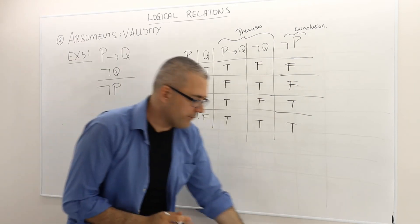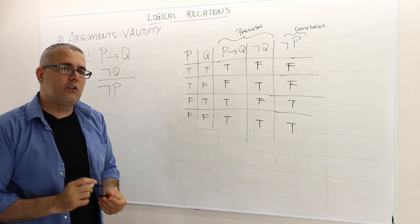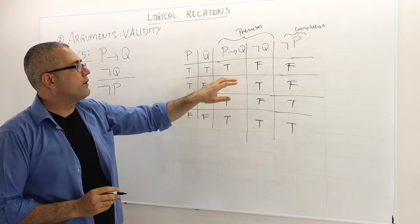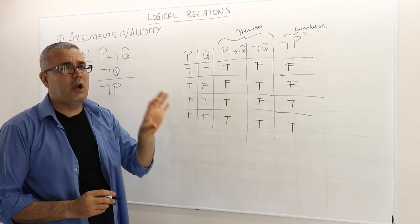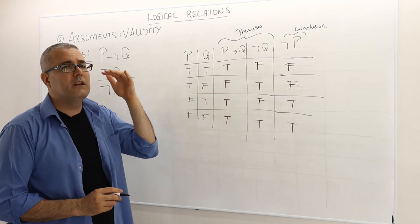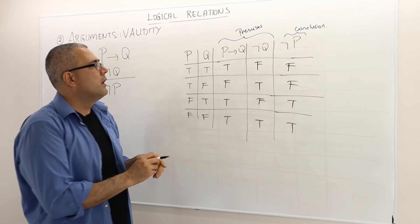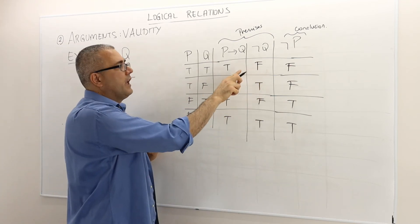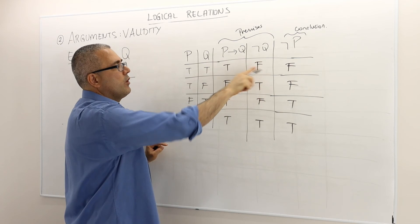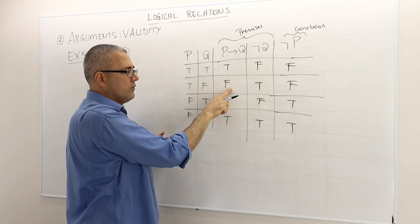So, again, validity of the argument says whenever premises are true, both premises are true, then the conclusion must be true. So, this is not one of those cases that I should be worried about because one of the premises is false here. Also, it's false. Here is also false.